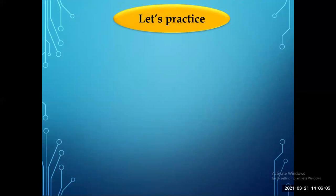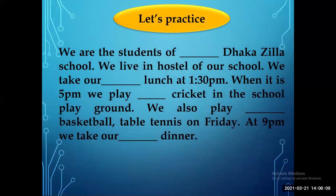Let's practice from rules 4 and 5. Fill in: 'Who are the students of __ school? We live in the hostel upon __ school. We take our __ lunch now at 1:30 PM. When it is 5 PM, we play __ cricket in the school ground. We also play __ basketball and __ table tennis on Friday. At 9 PM we take our __ dinner.' The first blank is cross — before the name of any institution we use cross.